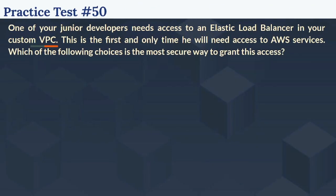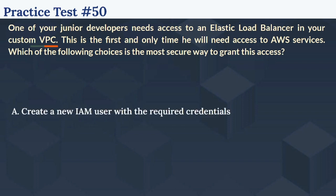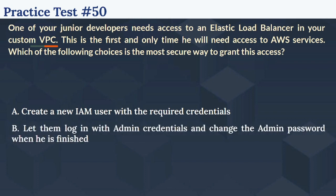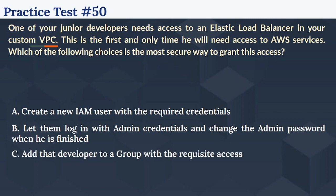The 50th question: One of your junior developers needs access to an elastic load balancer in your custom VPC. This is the first and only time he will need access to AWS services. Which of the following choices is the most secure way to grant this access? Options: A) Create a new IAM user with the required credentials. B) Let them log in with admin credentials and change the admin password when finished. C) Add that developer to a group with the requisite access. D) None of the above.